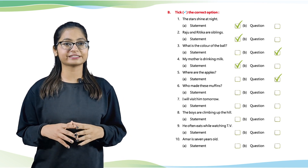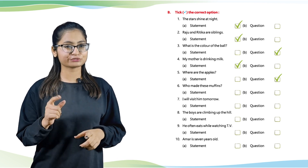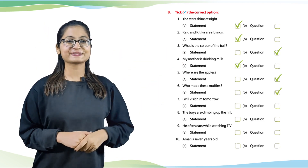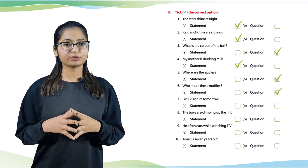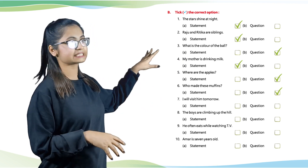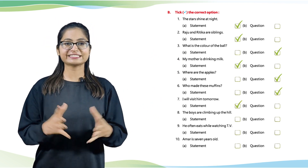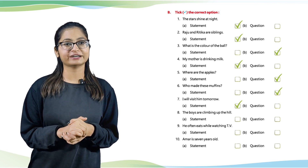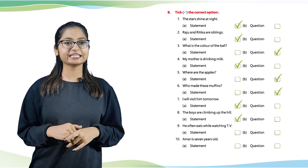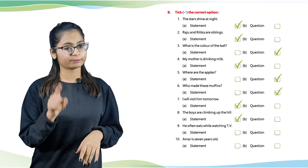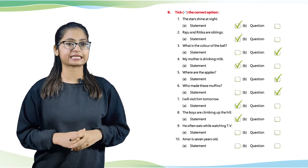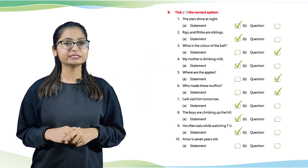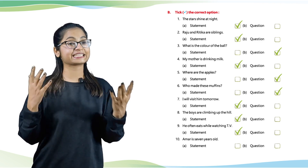Number 6: Who made these muffins? We will tick option B — Question. Number 7: I will visit him tomorrow. It's a statement, so we will tick statement. Number 8: The boys are climbing up the hill. It's a statement. Number 9: He often eats while watching TV. It's a statement. Number 10: Amar is seven years old. It's again a statement.